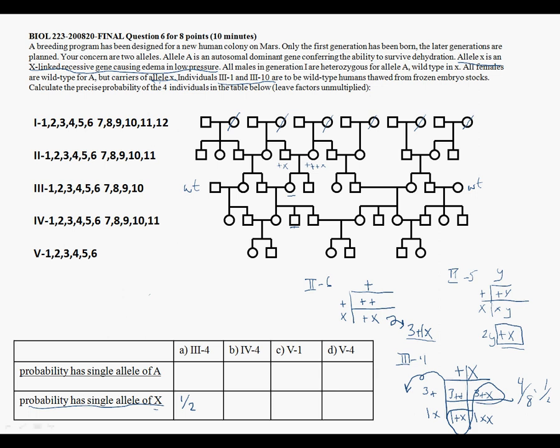Continuing with question 6 of exam 25, we are looking at the likelihood of these individuals 3-4, 4-4, 5-1, and 5-4 having a single allele of X.